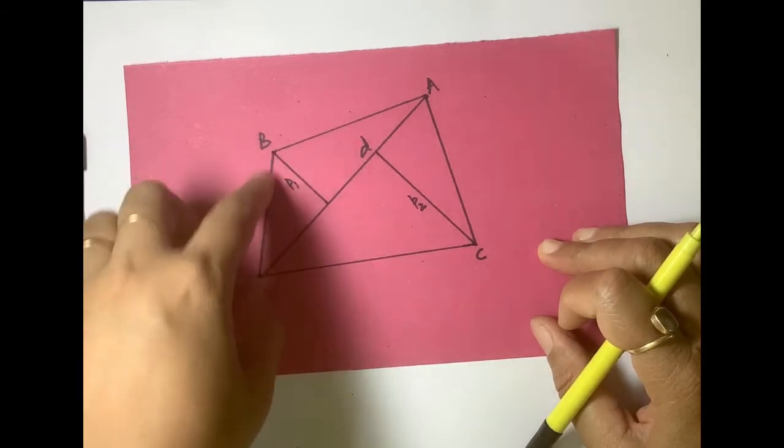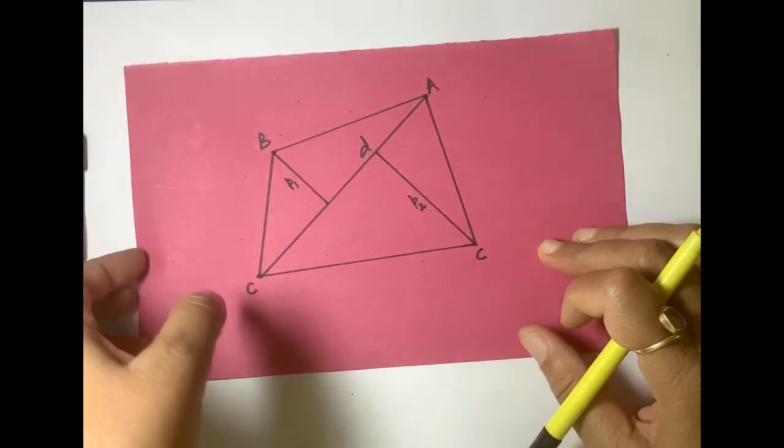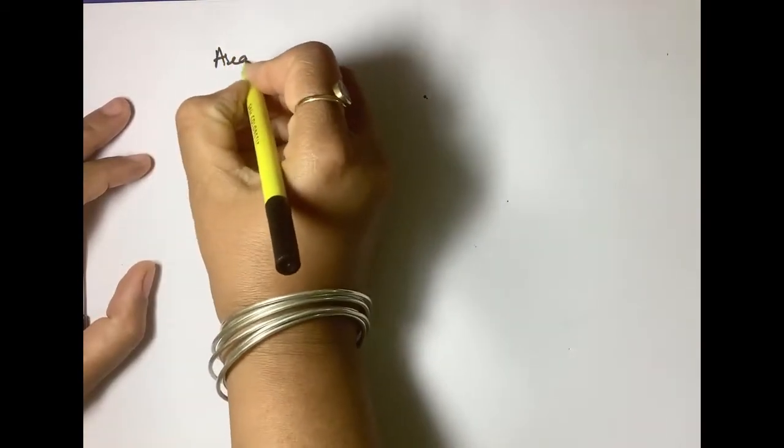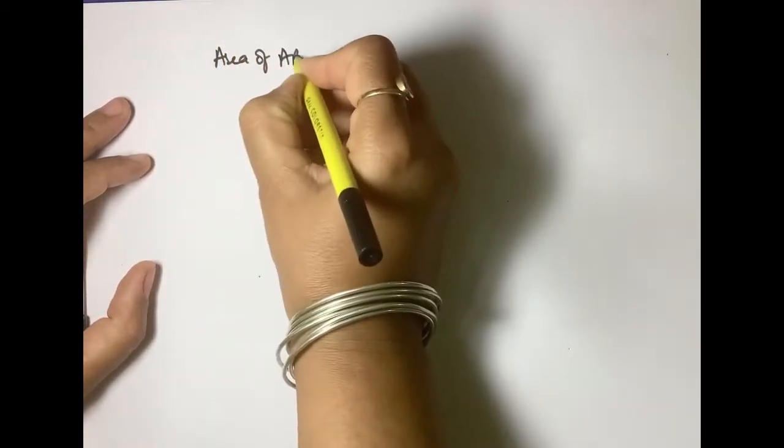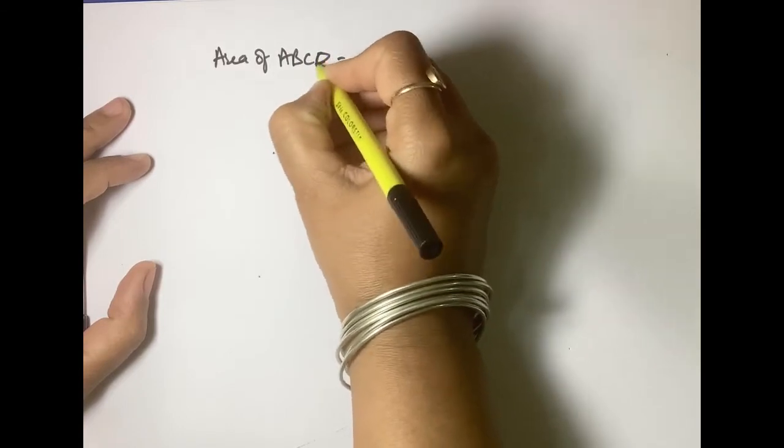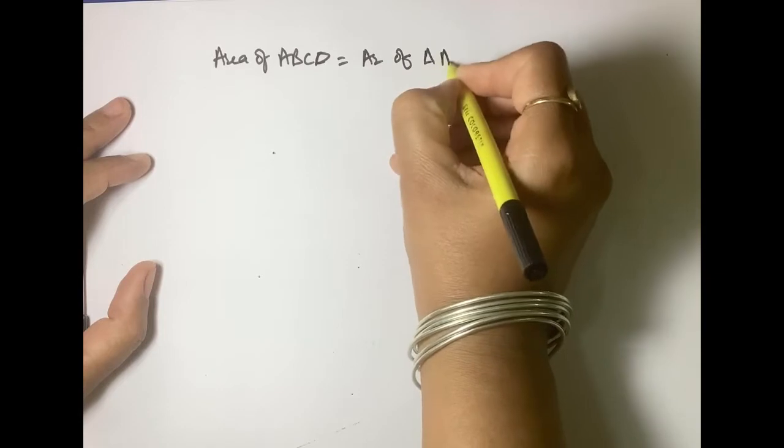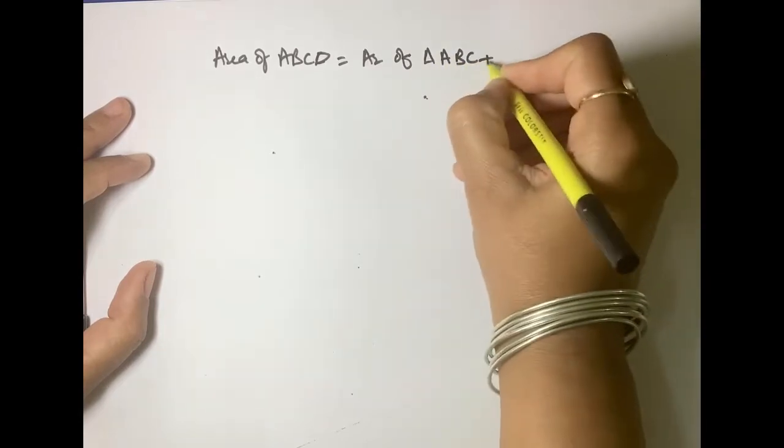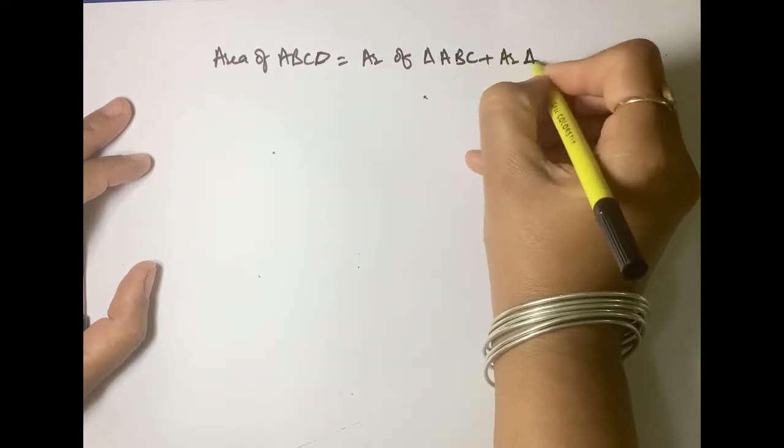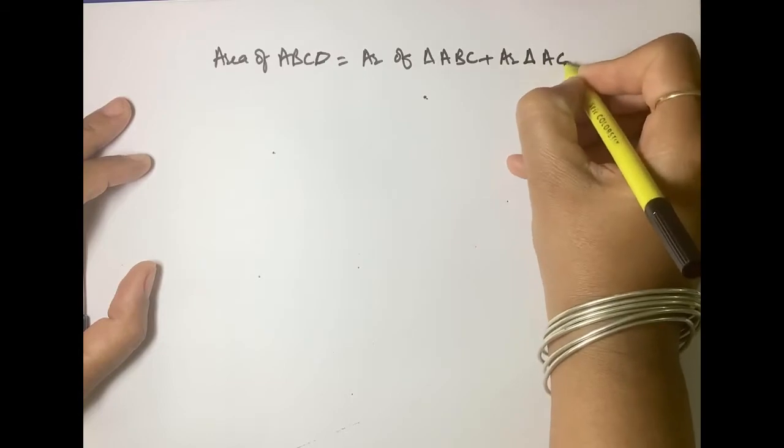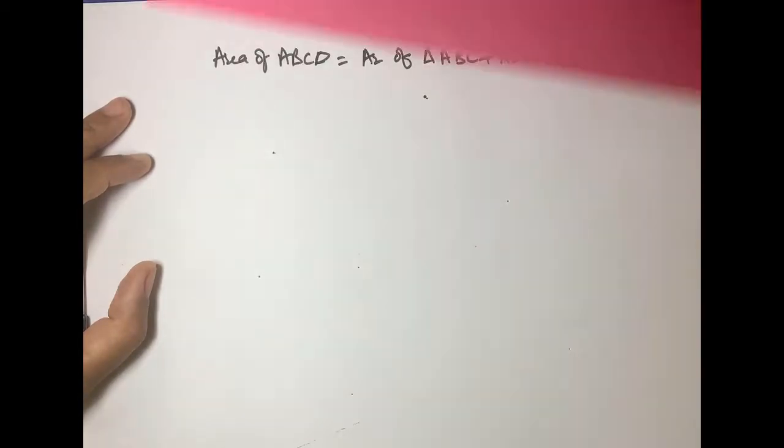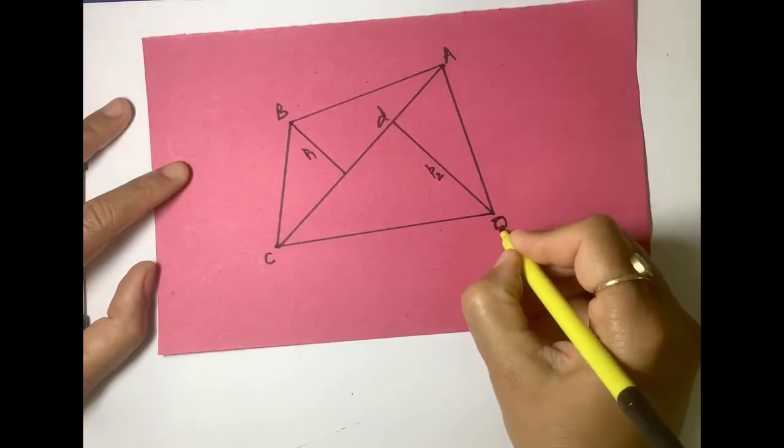To find out area of this quadrilateral, we can write area of ABCD is equal to area of triangle ABC plus area of triangle ACD. Sorry, this is D.